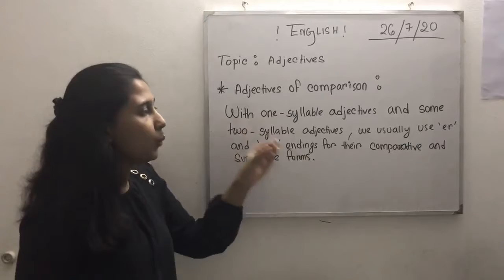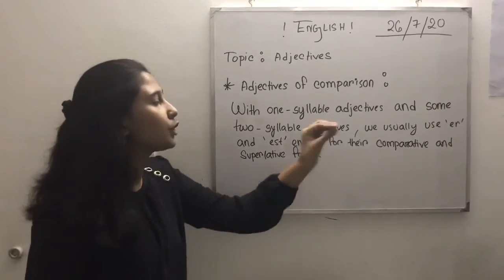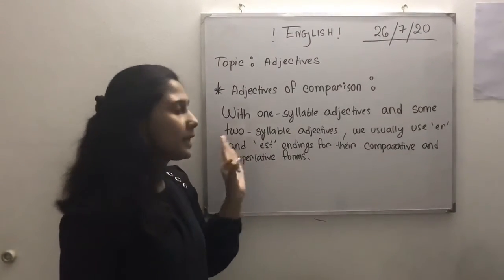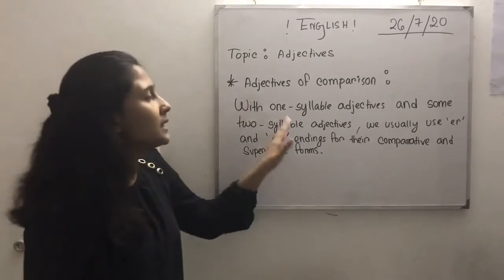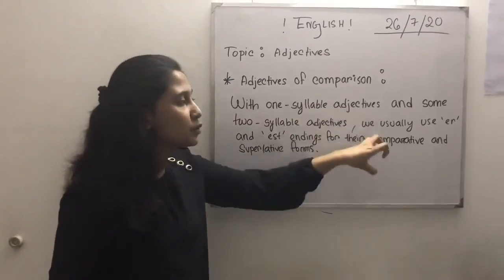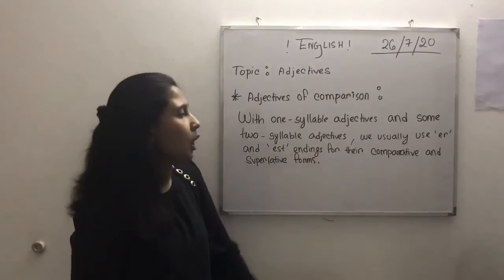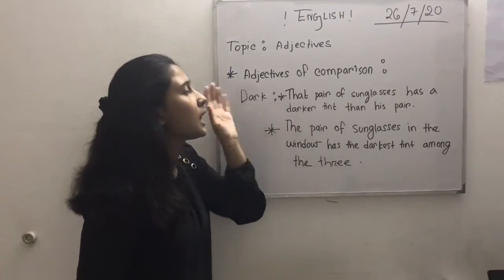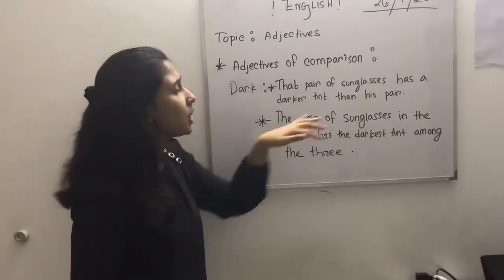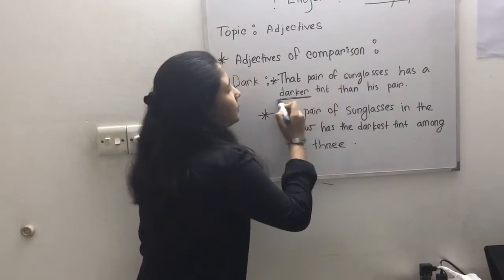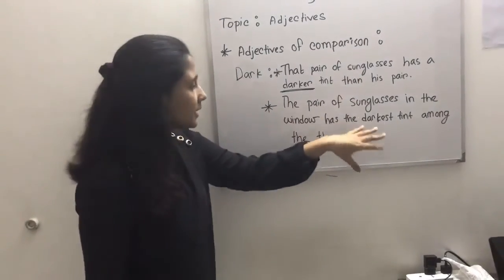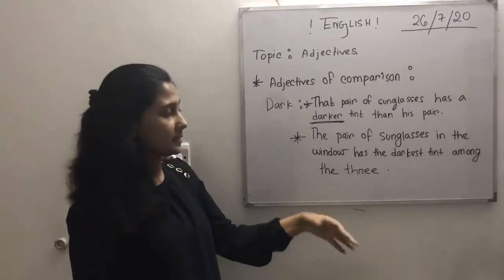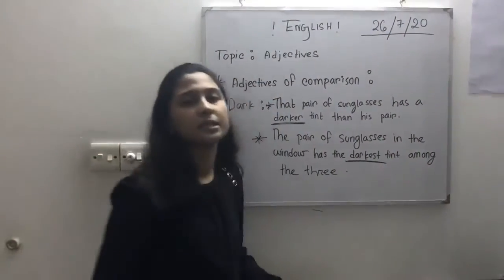With one-syllable adjectives and some two-syllable adjectives, we use '-er' and '-est' endings for their comparative and superlative forms. For example, with 'dark': 'That pair of sunglasses has a darker tint than his' — here 'darker' represents the comparative form. 'The pair of sunglasses in the window has the darkest tint among the three' — here 'darkest' represents the superlative form.